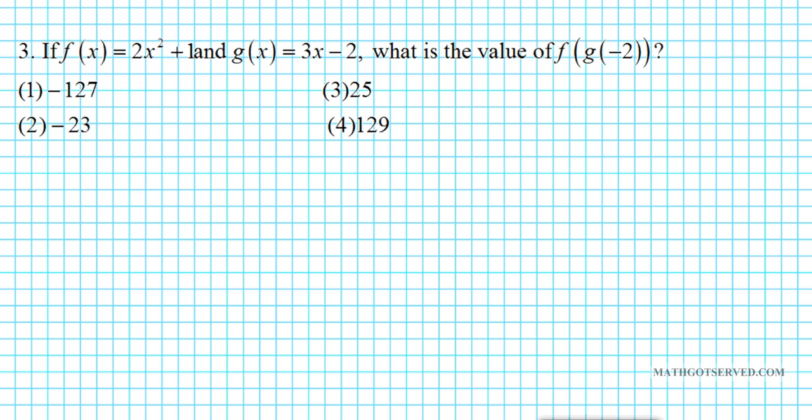Let's take a look at problem 3. It says if f of x is equal to 2x squared plus 1 and g of x is equal to 3x minus 2, what is the value of f of g of negative 2? So this is a problem where you're evaluating a composite function at a specific value. There are two ways of doing this. You can plug in the inner function into the outer function and then substitute, or you can plug in negative 2 into the inner function and then plug the result into the outermost function. That is what we're going to do here.